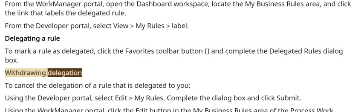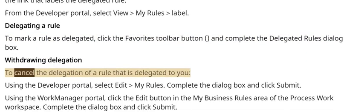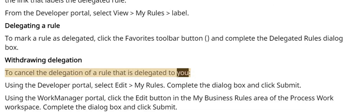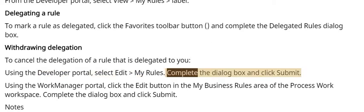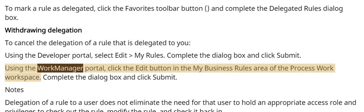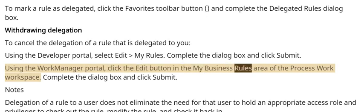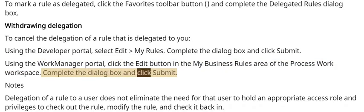Withdrawing Delegation: To cancel the delegation of a rule that is delegated to you, using the Developer Portal, select Edit My Rules, complete the dialog box, and click Submit. Using the WorkManager portal, click the Edit button in the My Business Rules area of the Process Work workspace, complete the dialog box, and click Submit.